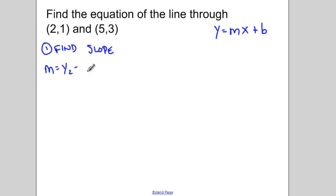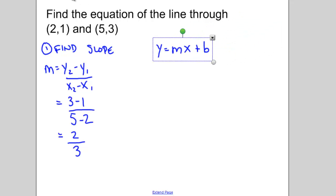Slope is y2 minus y1 over x2 minus x1. So subbing in my values, I've picked 5 and 3 to be x2, y2. 2 and 1 to be x1, y1. So subbing in I have 3 take away 1 over 5 take away 2. Solving this and reducing I get 2 over 3. So in my equation y equals mx plus b, I now know my slope is 2 thirds.